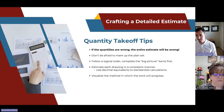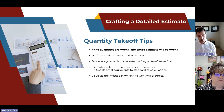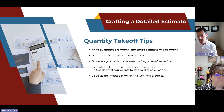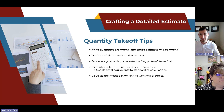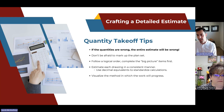A few more tips on conducting a quantity takeoff: if the quantities are wrong, the entire estimate will be wrong. Make sure you have a practical and standardized process for measuring different types of metrics. If multiple people are guessing different ranges, all those approximations add up and you end up with a broad range at the end rather than an accurate estimate. Use specific decimal equivalents — for example, use 2.25, 2.5, or 2.75 — and stick to that to standardize your approach.